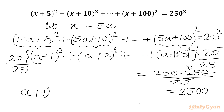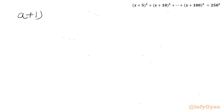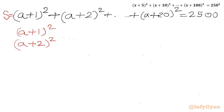The LHS is (a+1)² + (a+2)² + ... + (a+20)². Let us write this out clearly: (a+1)² + (a+2)² up to (a+20)².